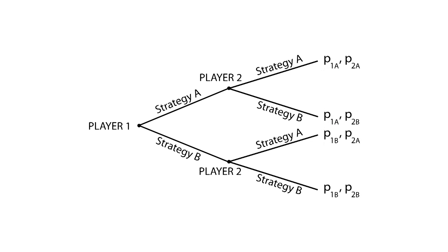It's worth mentioning that the extensive form can also be used to represent games with imperfect information, such as simultaneous games. In this case, we can represent this by joining player 2's nodes with a dashed line. This is called an information set.